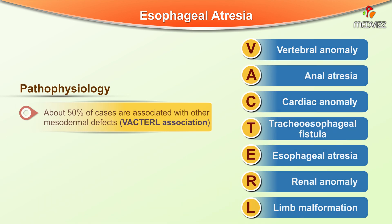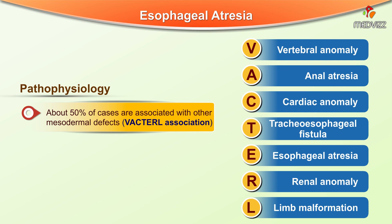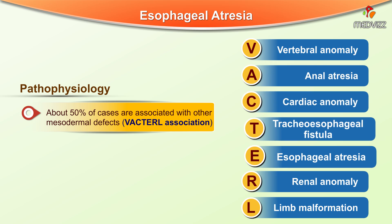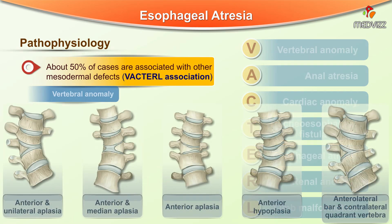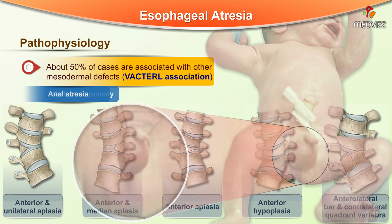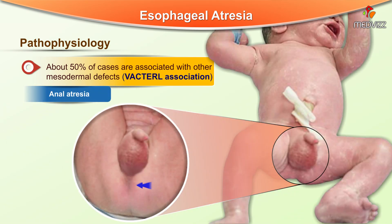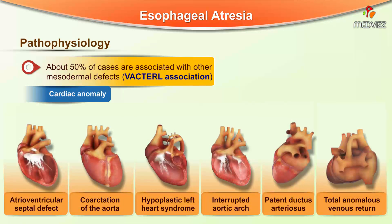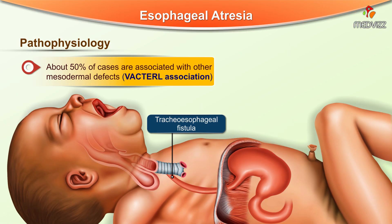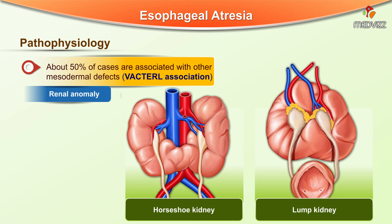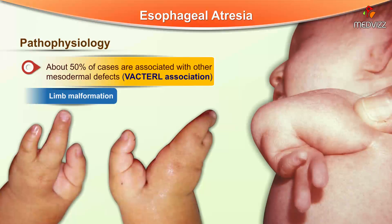About 50% of cases are associated with other mesodermal defects, memorized by the mnemonic VACTRL: V for vertebral anomalies, A for anal atresia, C for cardiac anomalies, T for tracheoesophageal fistula, R for renal anomalies, and L for limb malformations.